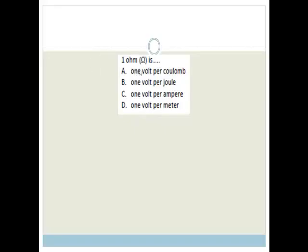Moving on. 1 ohm is 1 volt per coulomb, 1 volt per joule, 1 volt per ampere, 1 volt per meter. This grade 10 is checking if you know Ohm's Law. And Ohm's Law states that R equals V over I. So this is measured in ohms, this is measured in volts, and this is measured in amperes. Therefore, 1 ohm is 1 volt per 1 ampere, and the correct answer is C.